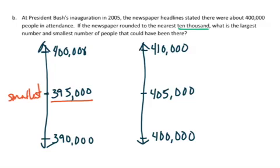Then I'm looking at this vertical number line over here, and I know that anything less than 405,000 would round to 400,000. So the largest amount of people that could have been there would be 404,999. And that would be the largest.